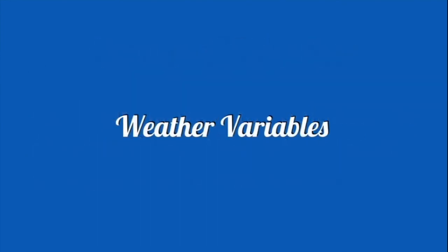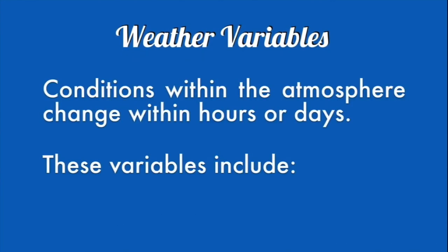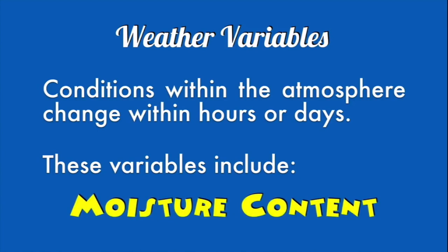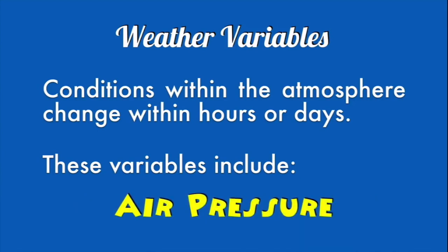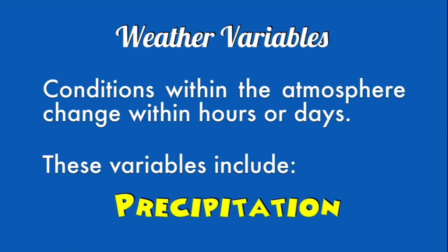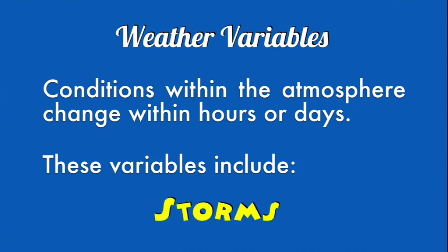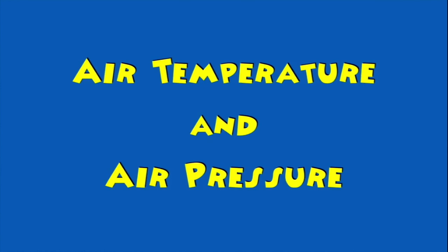When we talk about weather, we're really talking about specific variables — conditions within the atmosphere that change within hours or days. These can include temperature, moisture content, humidity, air pressure, precipitation, wind, the amount of clouds, and storms. For this specific video, we'll be looking at air temperature and air pressure.